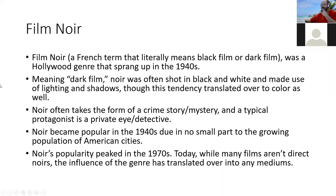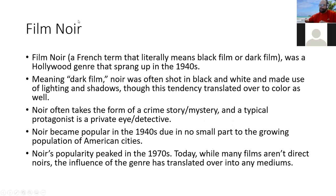Let me briefly explain what noir is. Film noir is a French term that literally means 'black film' or 'dark film' — noir in French means black. Calling it a 'black film' is a bit of a misnomer with a literal translation, which is why we call it dark film. It's a Hollywood genre that sprang up in the 1940s in America. Film noir and westerns — the next two units we're doing — are both genres that became big in the 1940s.